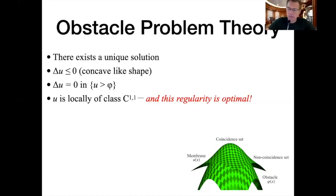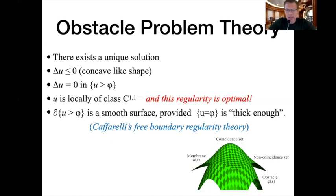In his famous 1977 paper, Caffarelli proved that the free boundary itself is a smooth surface, provided the contact set is thick enough. This is a major result that opened up an entire school of studying free boundary regularity theory.